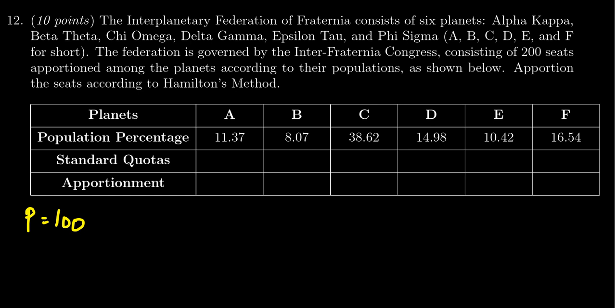Using the total population we can now compute the standard divisor, which is critical for Hamilton's method. So we're going to take the total population which is 100 and we then divide it by the number of seats which is 200, and so that's going to give us a standard divisor of one half or 0.5 if you prefer.